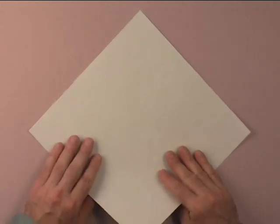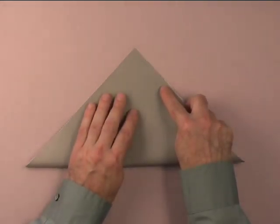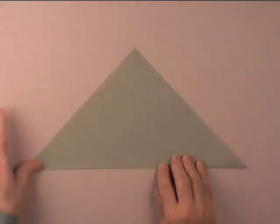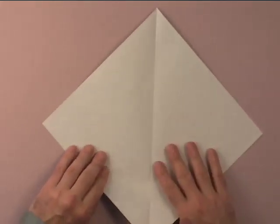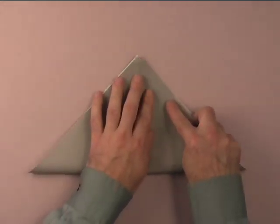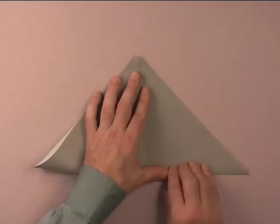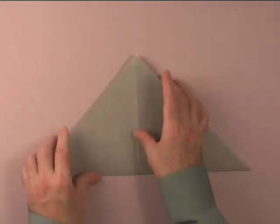You're going to need a square piece of paper and if you're using origami paper begin with the white side up. Fold in half corner to corner to make a colored triangle and open. Rotate the paper so that you can fold the paper in half corner to corner the other way and open.